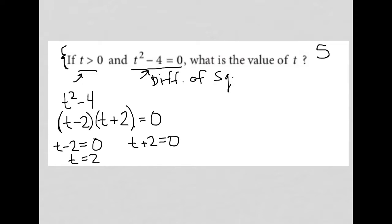I'd get t equals 2 here, because I'd add 2 to both sides. And over here, I'd get t equals negative 2, because I'd subtract 2 from both sides.